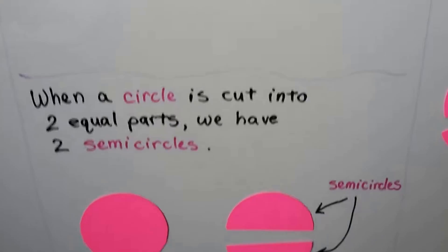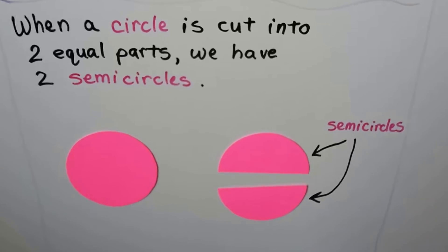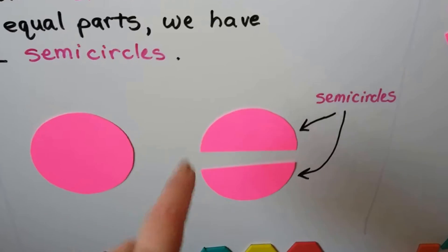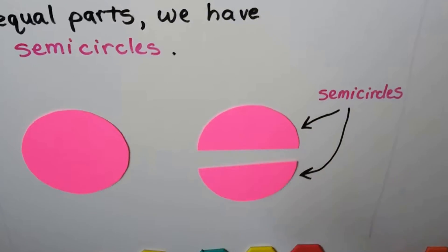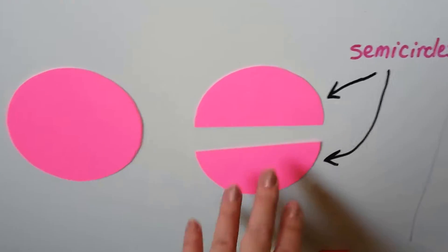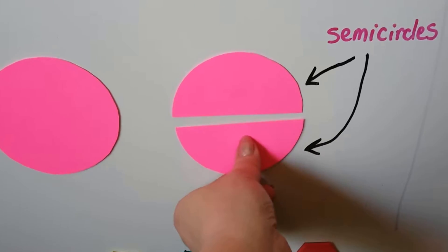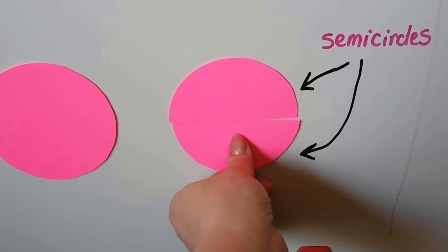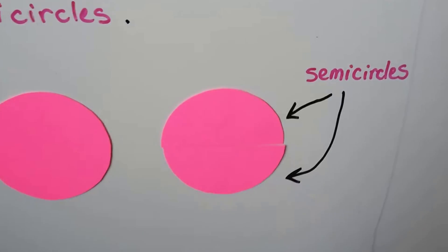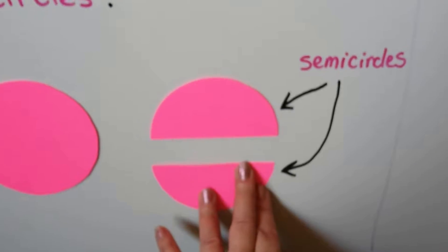When a circle is cut into two equal parts, we have two semicircles. So that's a semicircle and that's a semicircle — it's just this circle cut right down the middle, cut in half. It's a half circle, it's a semicircle. When we put them together, we make the circle again.